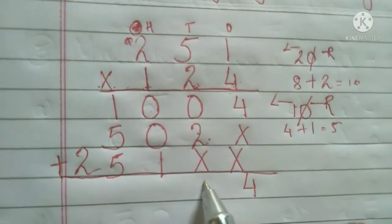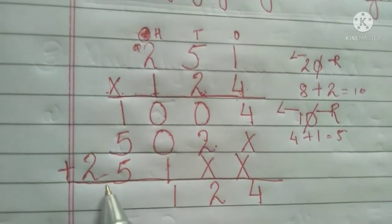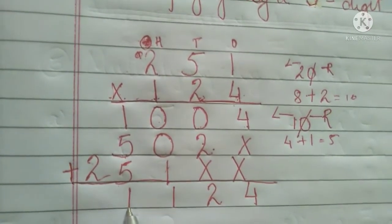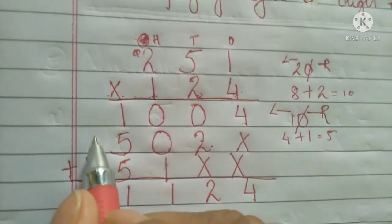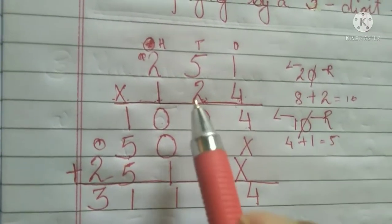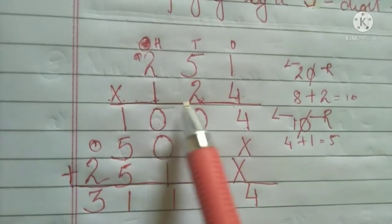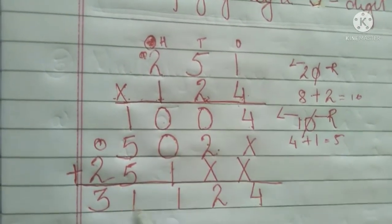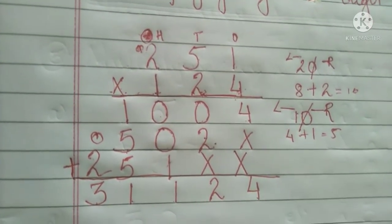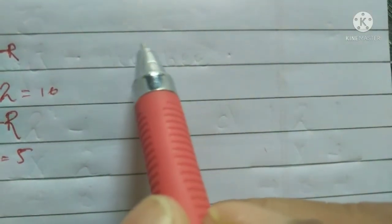Now the last step — you need to add: four plus zero plus zero equals four; zero plus two equals two; zero plus zero plus one equals one; five plus five is ten, and ten plus one is eleven, so write one and carry one; two plus one equals three. That means when you multiply 251 by 124, you get thirty-one thousand, one hundred and twenty-four. I hope you understood — let's take one more example.